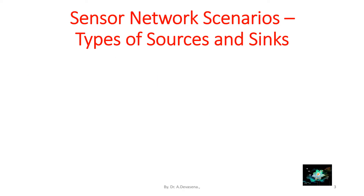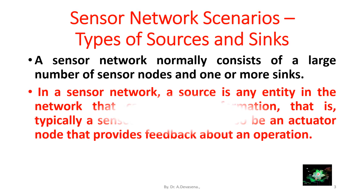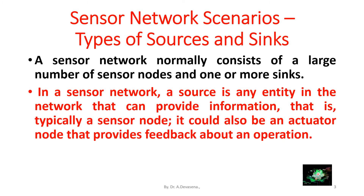Types of sources and sinks. A sensor network normally consists of a large number of sensor nodes and one or more sinks. In a sensor network, a source is any entity in the network that can provide information — that is, typically a sensor node. It could also be an actuator node that provides feedback about an operation.